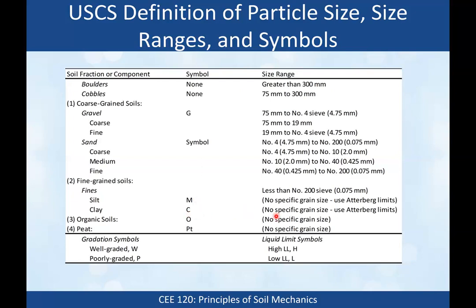Then we have clay, for which you use Atterberg limits and plot on the plasticity chart. For organic soils, we use the symbol O, and we classify them in the same way as clay and silt using the Casagrande plasticity chart. So you might have CL or OL — if there's an adequate amount of organic content in a soil that would otherwise be CL, we call it OL. Peat is more highly organic than organic soil — like potting soil — and has the symbol PT.